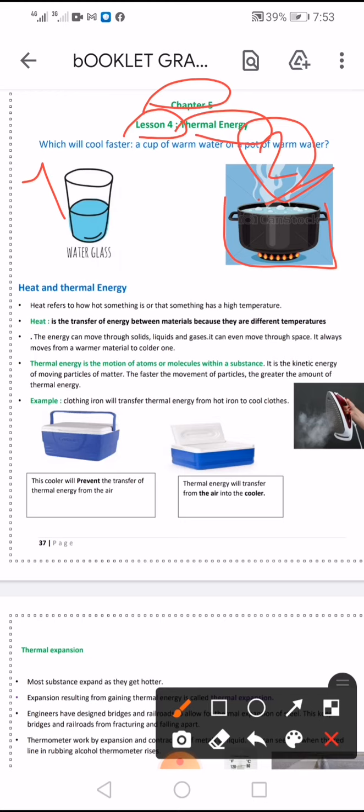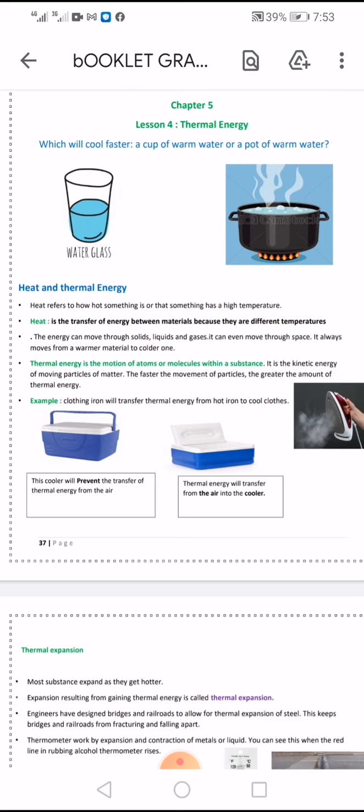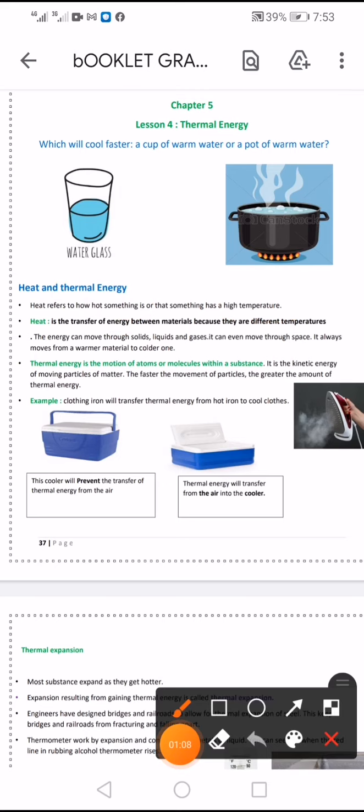Heat and thermal energy. First we should know the meaning of heat and the meaning of thermal energy and the difference between heat and thermal energy. Heat refers to how something is or that something has a high temperature. Heat is transfer of energy, transfer of energy between materials because they are at different temperatures.